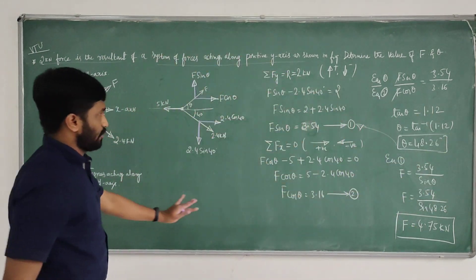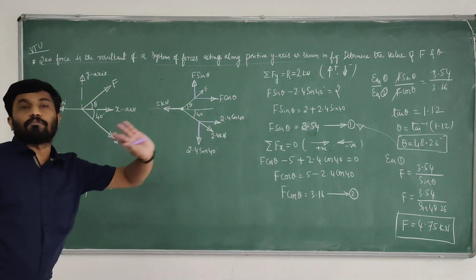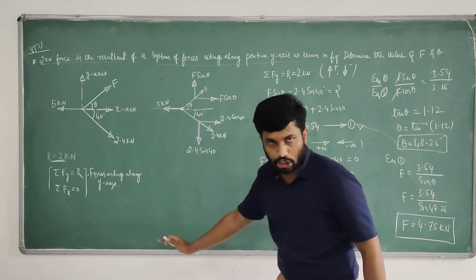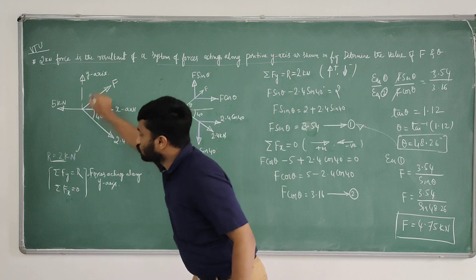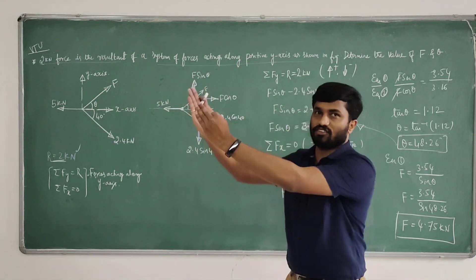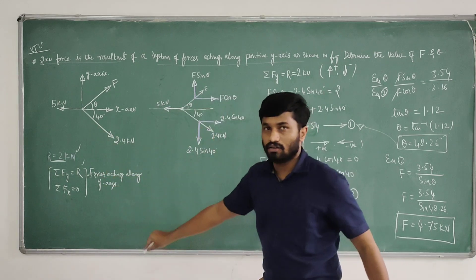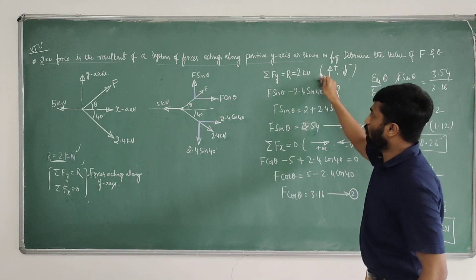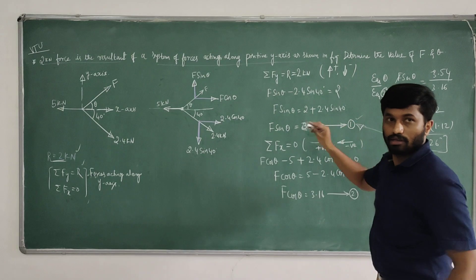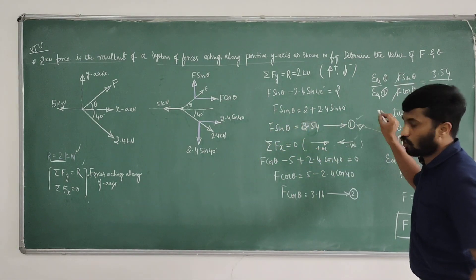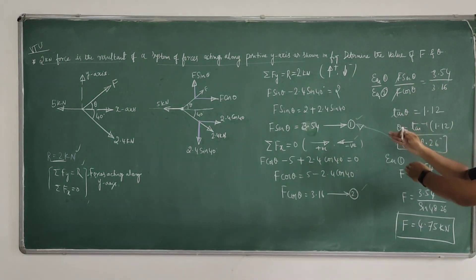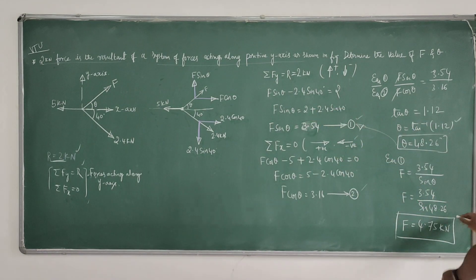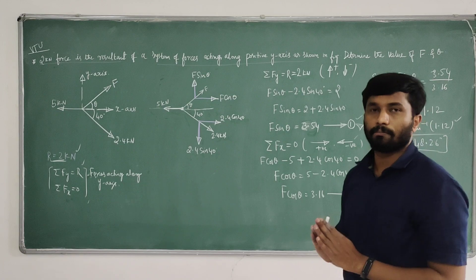This is a condition-oriented problem, worth 8 marks, and a very simple problem from previous year VTU examinations. Observe the problem, impose the condition: 2 kN is the resultant, R is 2 kN, forces act along y axis, so sigma Fy equals R and sigma Fx equals 0. Write the free body diagram, apply both conditions to get two equations, divide equation 1 by equation 2 to get theta, then substitute theta to get F. Thank you.